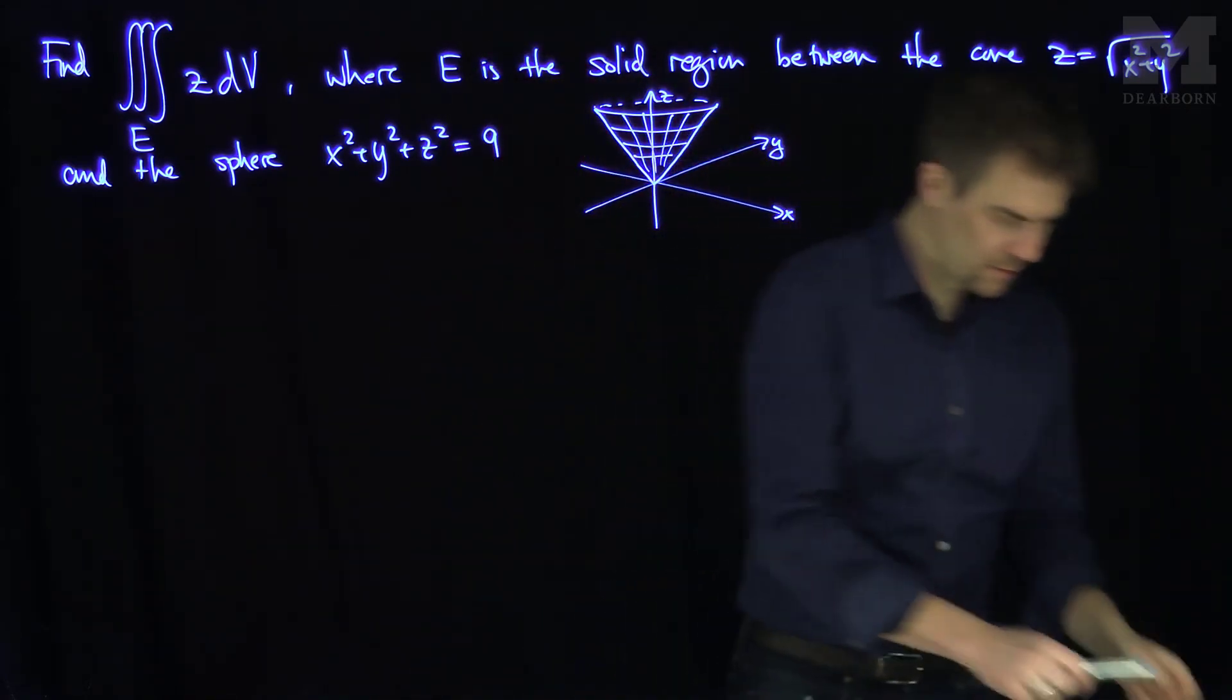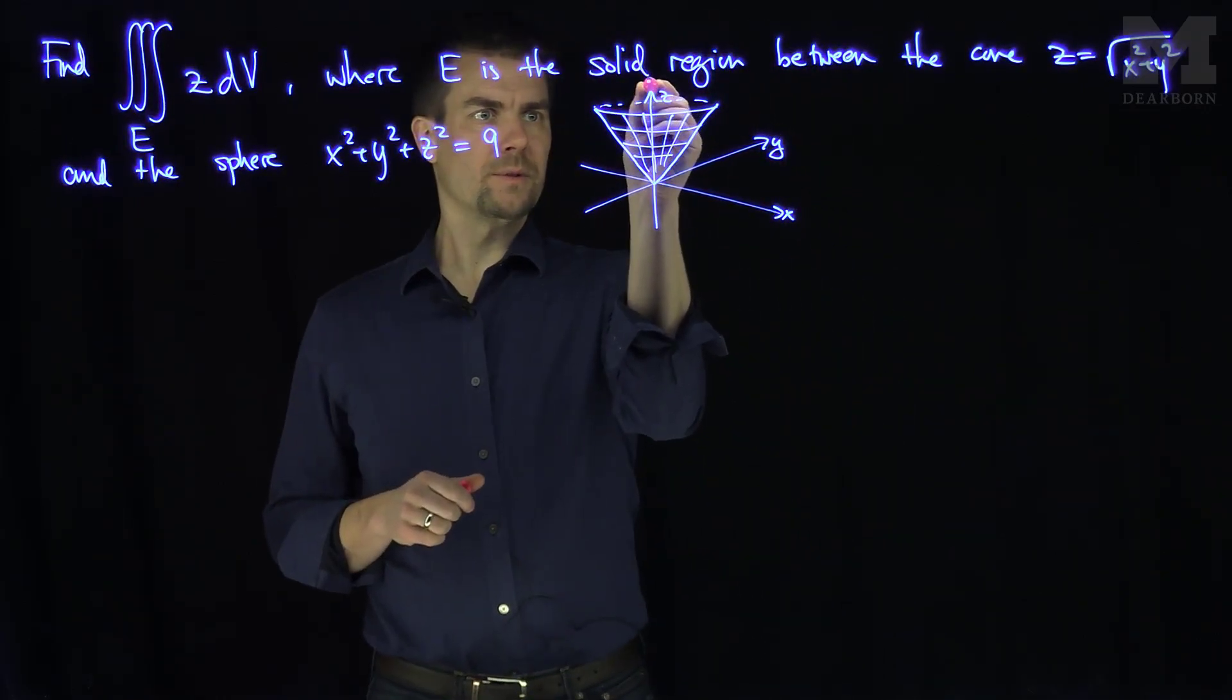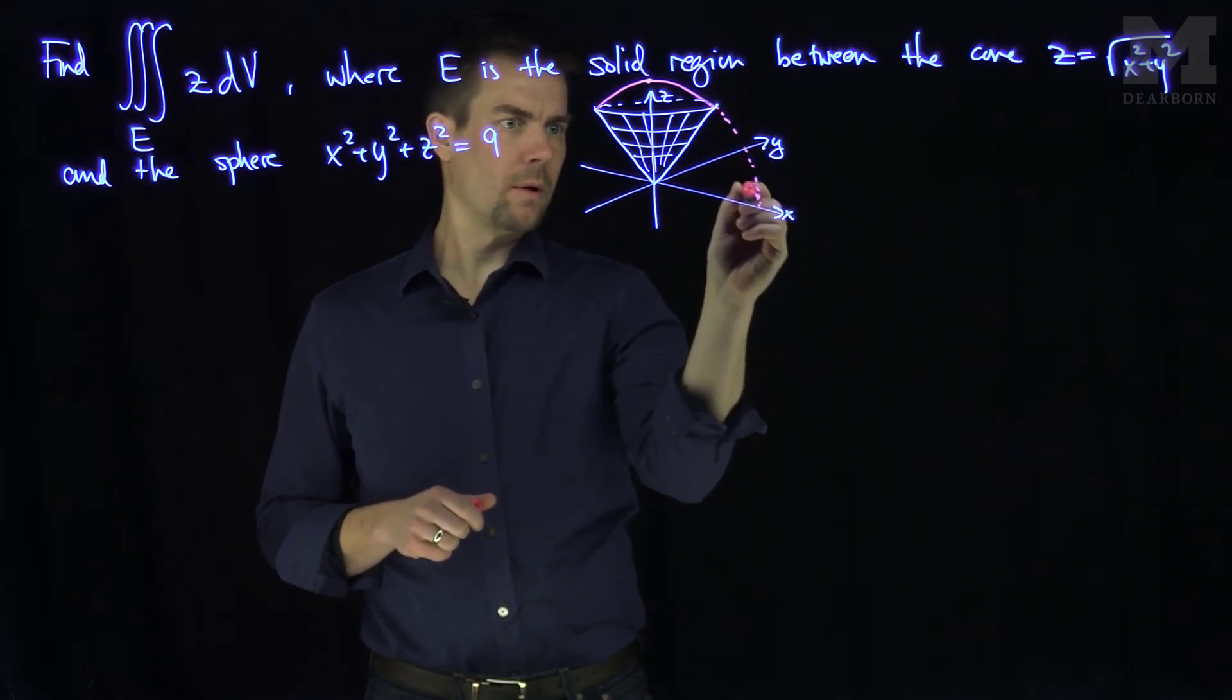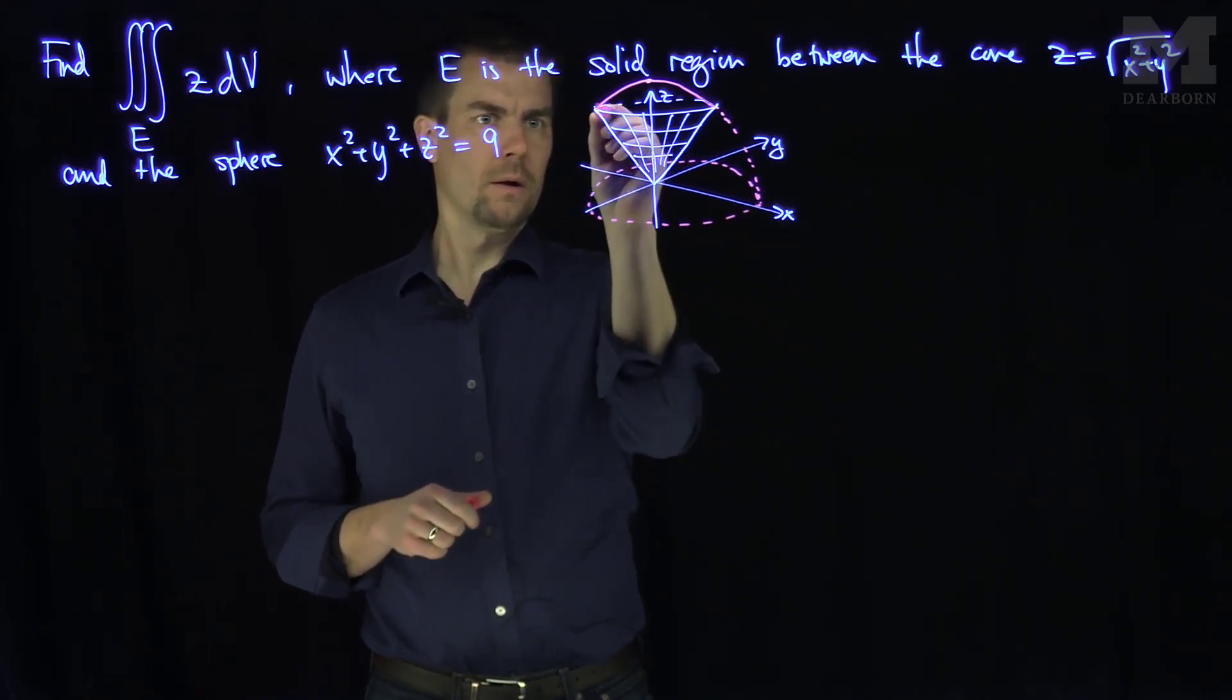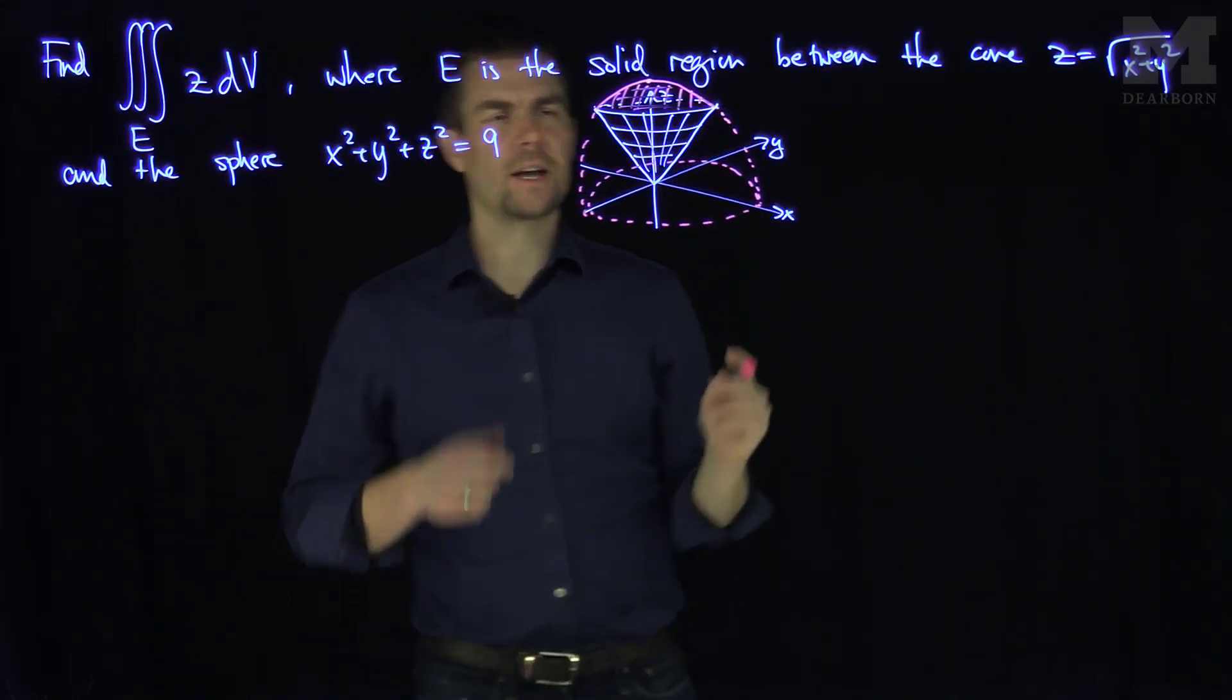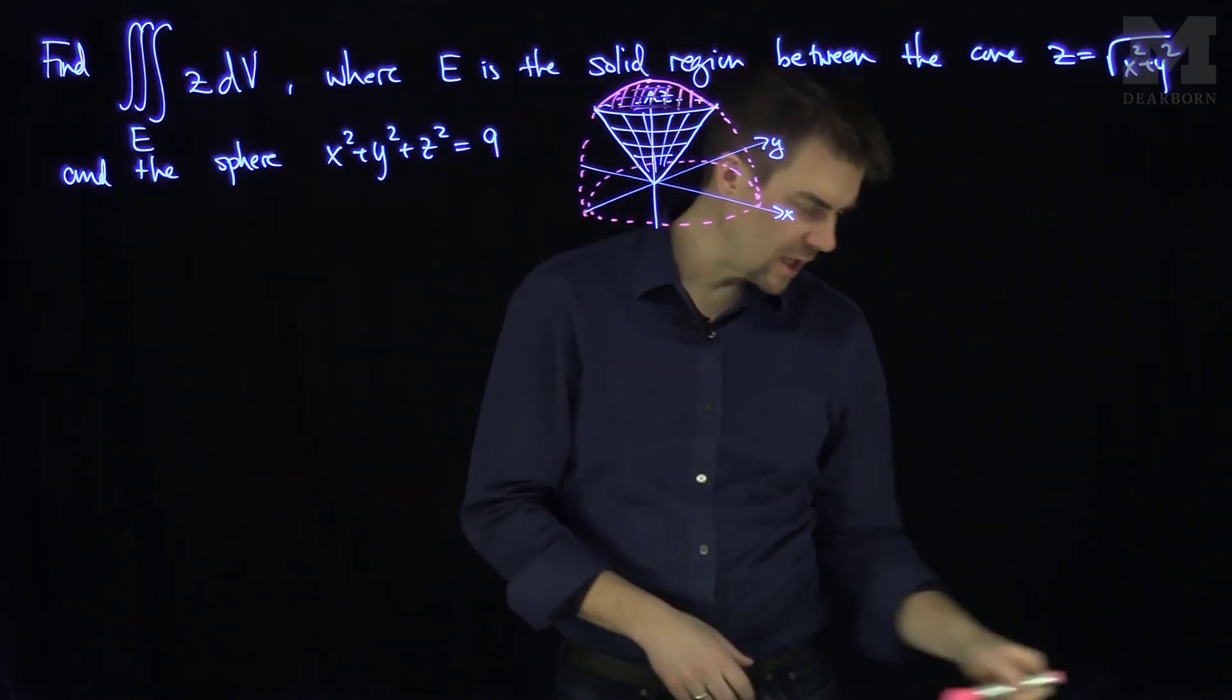And then the sphere of radius 3 looks like this. So the sphere will start maybe somewhere up here. It will intersect the cone at some point. And then continue to go down. And the part of the sphere we care about is that top part of the sphere where that sphere is going to intersect with the cone. So I have this ice cream cone-shaped object over here as my region E.